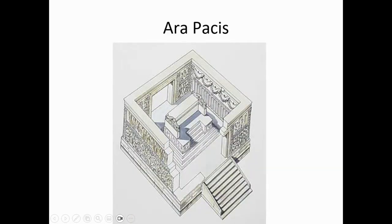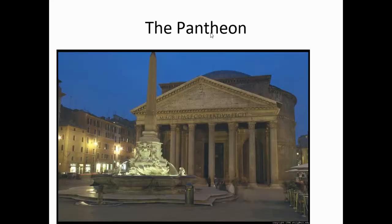Moving on to Roman art and the Ara Pacis. This was dedicated by the first emperor of Rome, Augustus, in 12 BC — essentially the Altar of Peace, as you can see here. The Ara Pacis has recently, within the last 20 years, been restored and put on display once more in Rome.